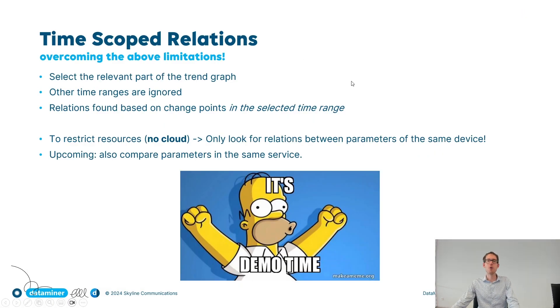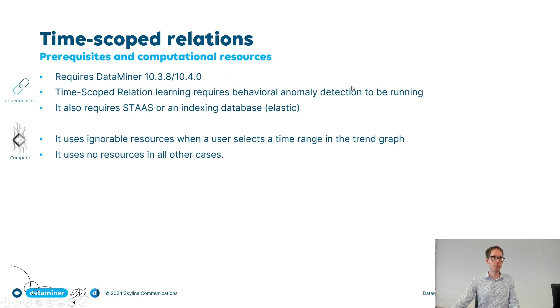Okay, so let us go back to the presentation and wrap things up. First of all, what about prerequisites? Well, time scoped relation learning requires anomaly detection because, well, what's the underlying idea I told you? It's going to look if other parameters had behavioral changes in your selected range. So it needs to fetch anomalies. It needs to have anomaly detection enabled. It also requires an indexing database such as Elastic or OpenSearch because it needs to perform some complicated queries on the database.